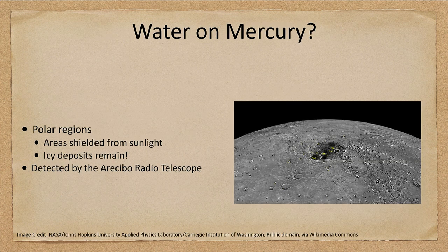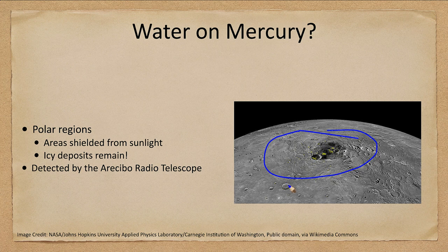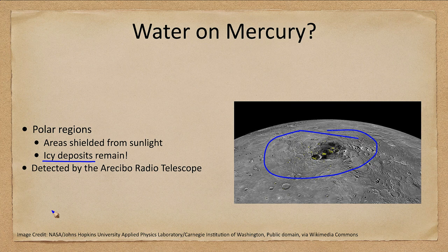Could there be water on Mercury? We would expect no — no atmosphere, and certainly no liquid water would be possible. However, we do have some areas, like on our Moon, where there are regions shielded from sunlight, highlighted in yellow here. These are areas on Mercury that never see the Sun, so icy deposits remain there, perhaps from cometary impacts that hit that region and left their material behind. Because they're shielded from the Sun, they never get hot enough to vaporize that material. Water deposits on Mercury were detected by the Arecibo telescope.